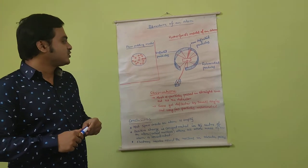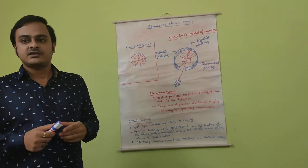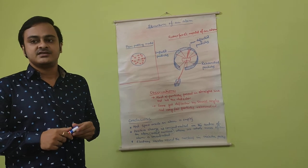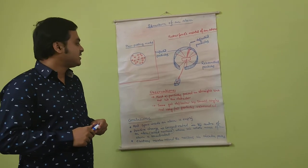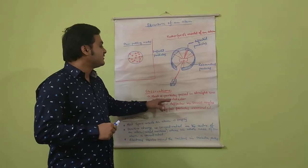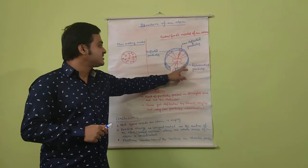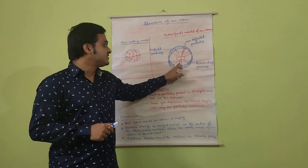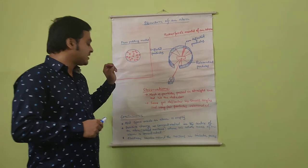However, Rutherford was astonished to see the results. Why was Rutherford astonished? Most of the alpha particles passed in straight lines and hit the detector. Some got deflected by small angles, and very few alpha particles rebounded their path, as it is being depicted in this particular diagram.